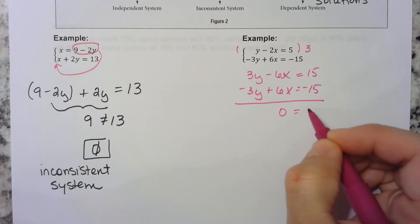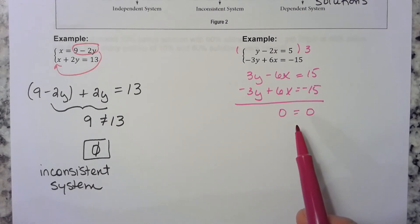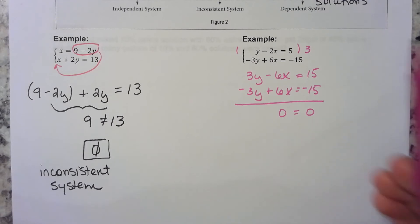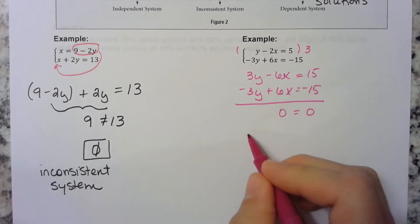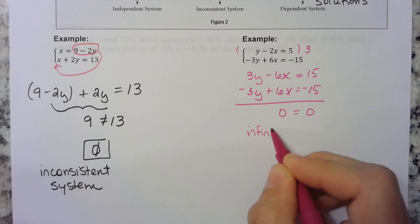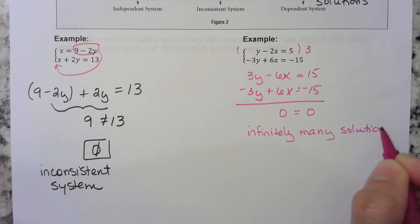This is a true statement. This is where we have one of those infinitely many solutions situations, because if you graph this line, this line would lay right on top of it. So they intersect everywhere. This has infinitely many solutions. This is called a dependent system.